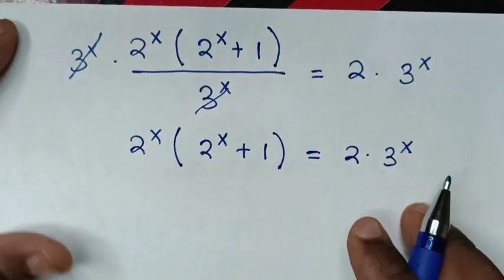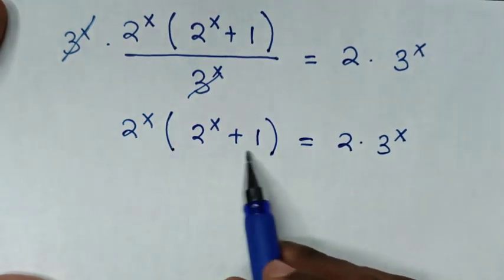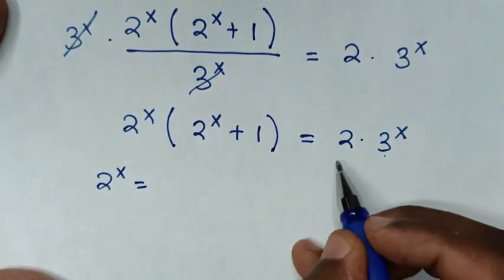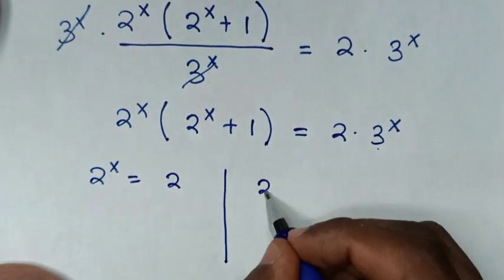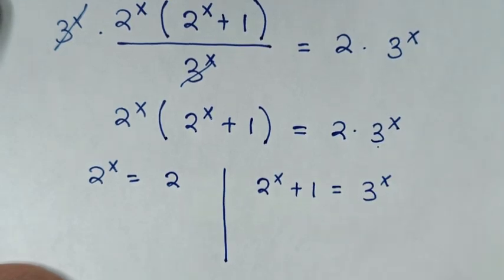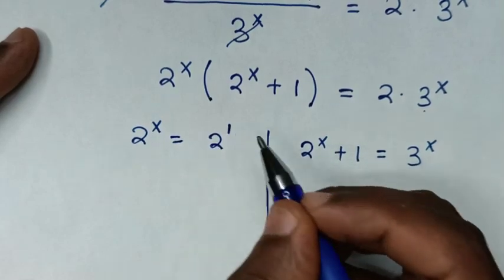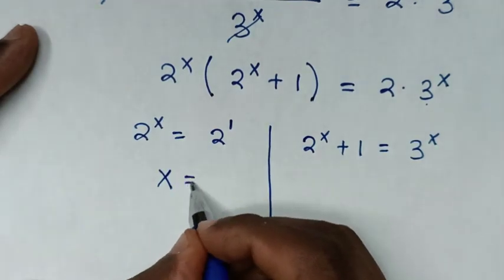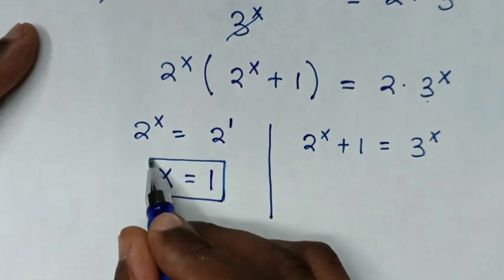We compare both sides: 2^x equals 2 and 2^x plus 1 equals 3^x. From the first equation, since 2 equals 2^1 and the bases are the same, we compare the powers to get x equals 1. Therefore, x equals 1 is the value of x in our problem.